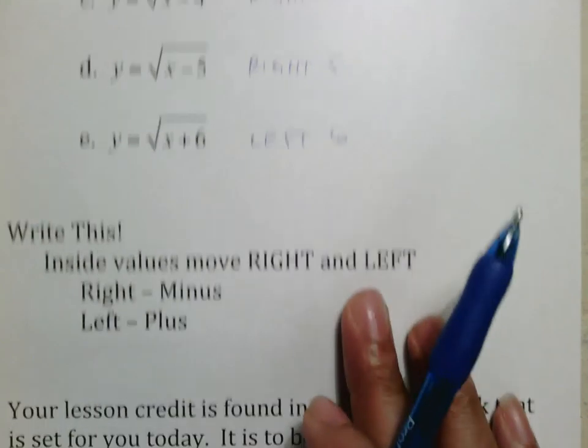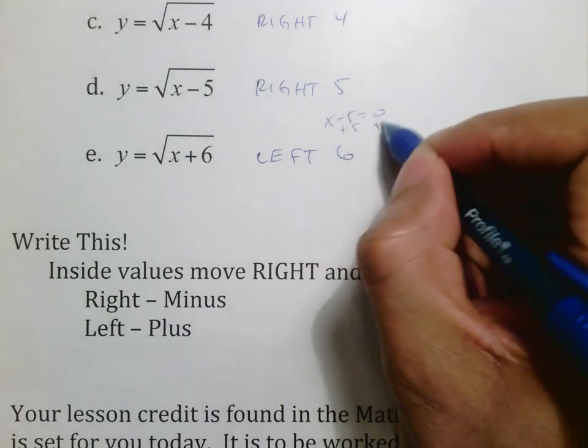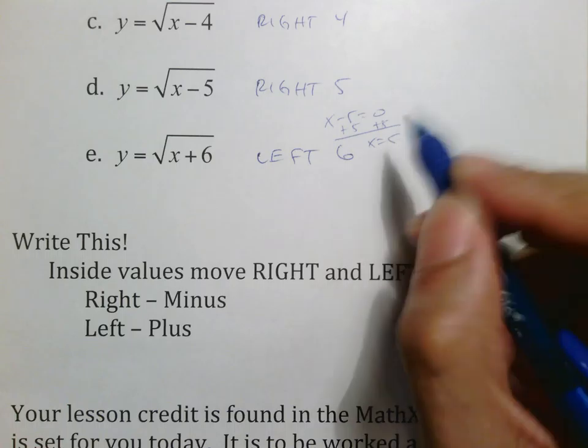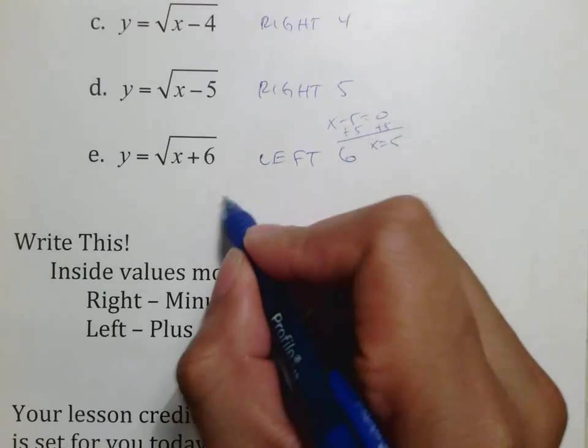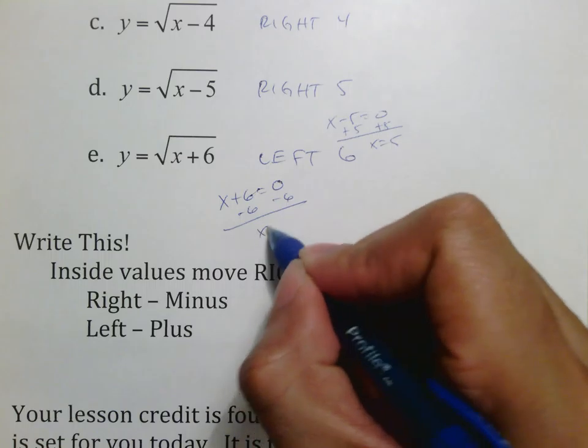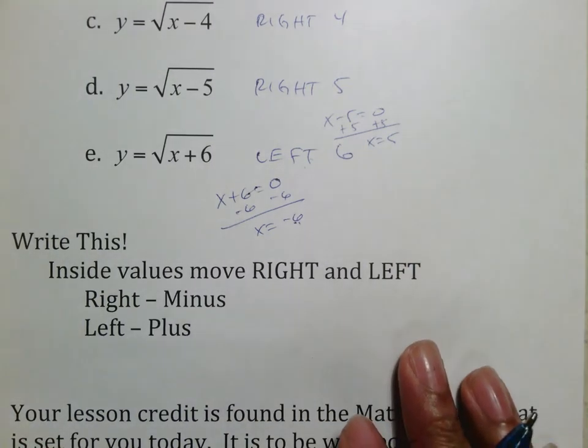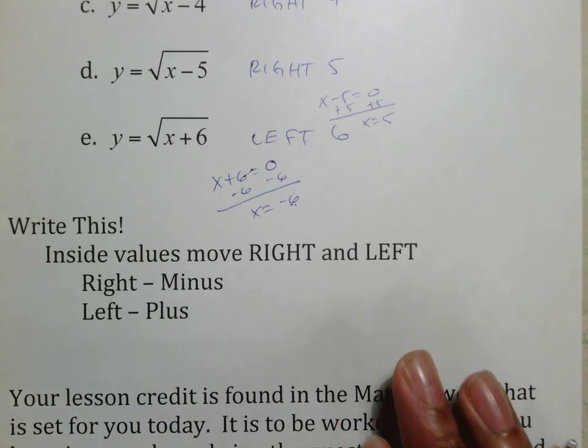One way to think about it is this: if you were to solve x minus five equals zero, you would add five to both sides and get x equals five—that's a positive five. If you were to solve x plus six equals zero, you would subtract six, which gives you a negative six, which is where you can kind of imagine what's going on. Either way, whenever it's inside the radical, switch the information to make sure you get what's going on.